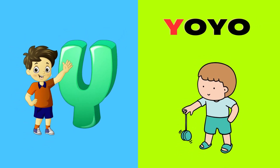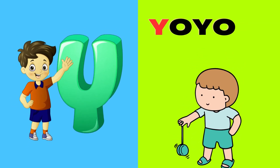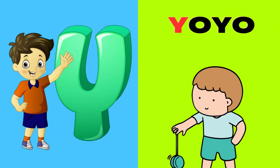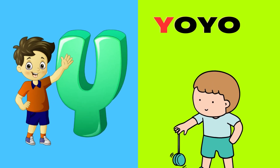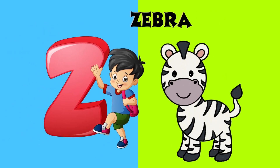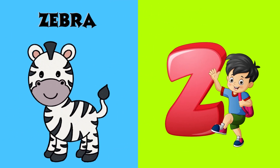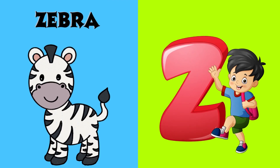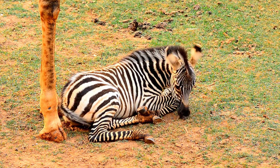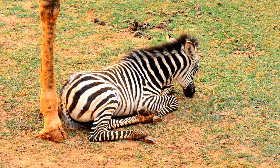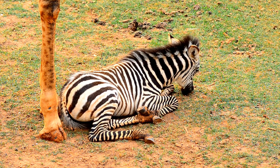Y is for Yo-Yo. Y-Y-Yo-Yo, Y-Y-Yo-Yo. Y, Y-Yo-Yo. Z is for Zebra. Z-Z-Z-Zebra, Z-Z-Zebra, Z-Z-Zebra.